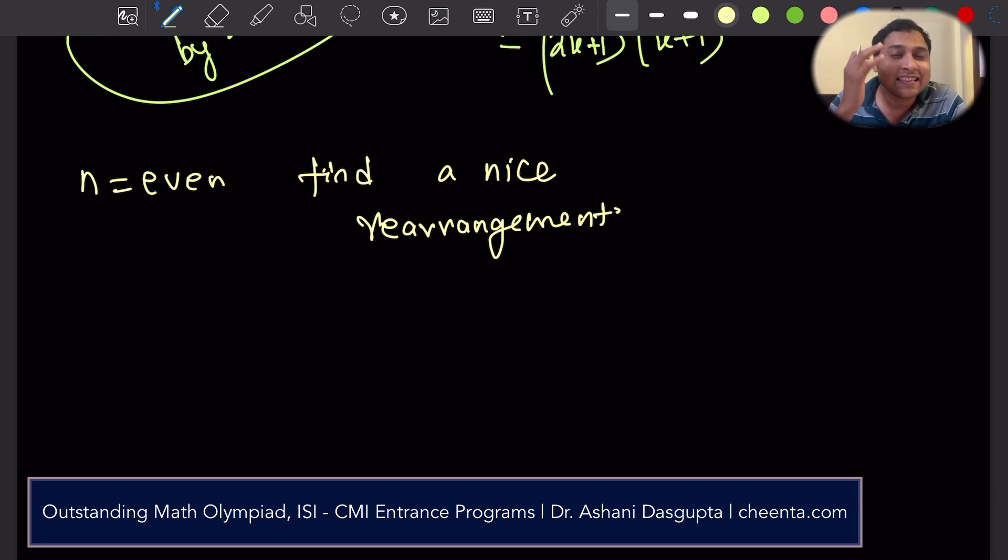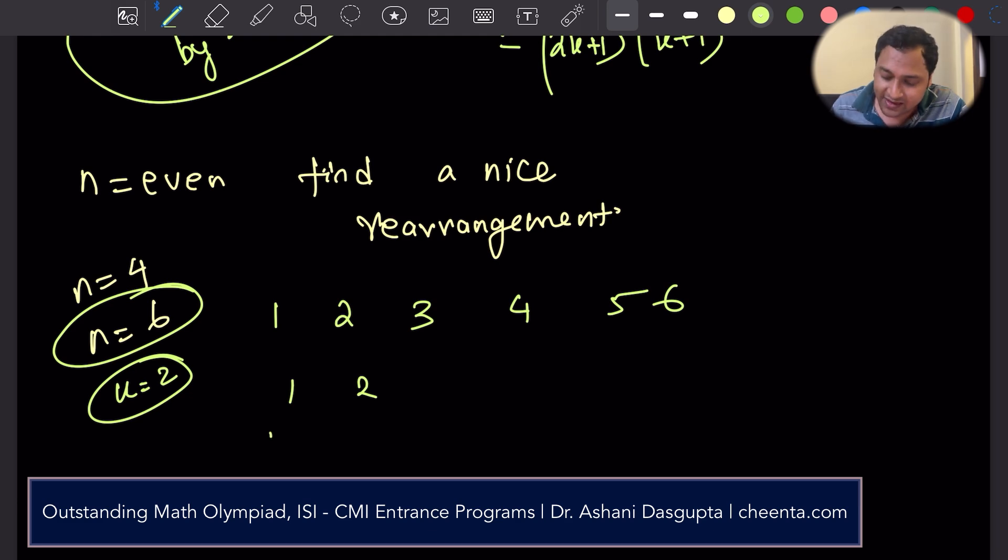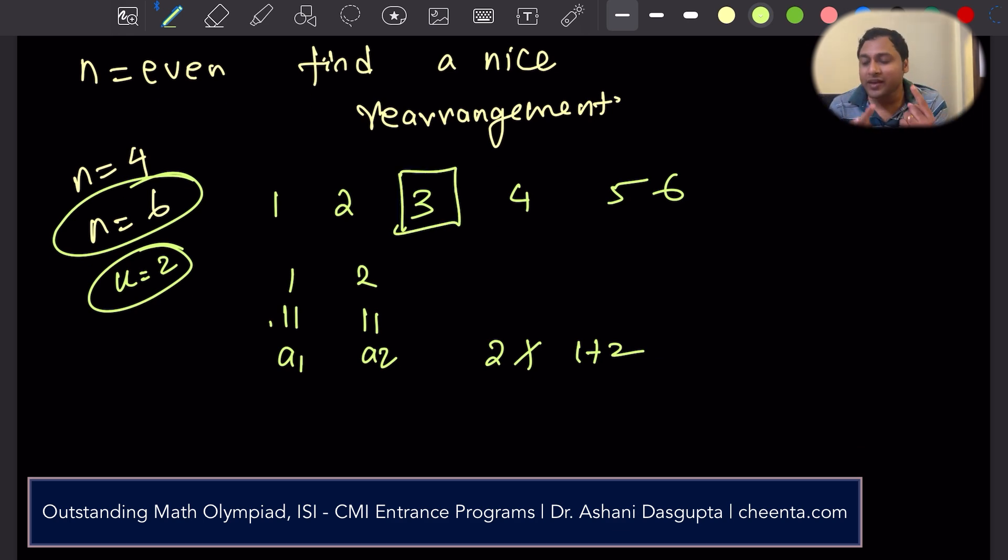The clue is, let your brain do the work. Choose some even number, maybe n equal to 4, maybe n equal to 6. Choose some even number and try to create, let your brain create a rearrangement which is not nice. So what I'll do is, I'll play a game. 1, 2, 3, 4, 5, 6. Let's work with 6. You will see the pattern. So obviously, we'll start with k equal to 2. So if I just put 1 and 2 as the first two numbers, a1 and a2, obviously, 2 won't divide 1 plus 2, which is odd. Okay, so now, if I go to 3, if I go to 3, and if I put a3 as 3, then my experiment will fail, because 1 plus 2 plus 3, 3 is an odd number, is divisible by 3. That's what we proved in the last split. So instead of 3, let's put 1 more than 3. Let's put 4.